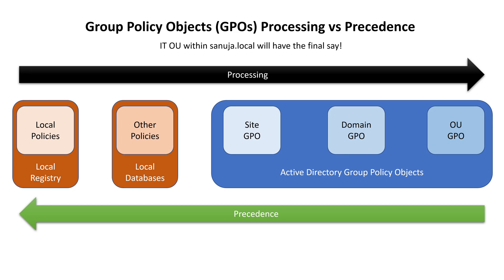That's everything for today. I'll leave you with this diagram, which is very useful if you are taking any exams or working on a Windows Server. As I showed in my demonstration, the organizational unit — for example within sanuja.local — will have the final say in how group policies are applied to your end device. Until next time, please make sure to thumbs up this video, subscribe to my channel, and have a nice day.